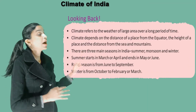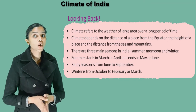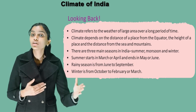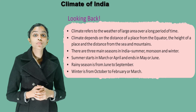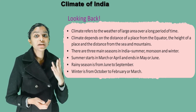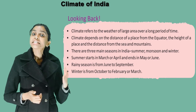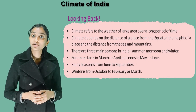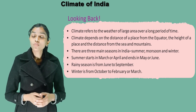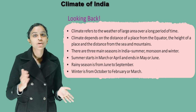Now it's time for looking back. Climate refers to the weather of large areas over a long period of time. Climate depends on the distance of a place from the equator, the height of the place, the distance from the sea and mountains. There are three main seasons in India: summer, monsoon and winter. Summer starts in March or April and ends in May or June. Rainy season is from June to September. Winter is from October to February or March.